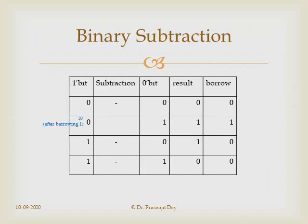For binary subtraction: 0−0 gives result 0 borrow 0; 0−1 gives result 1 borrow 1. Why? In decimal, 0−9 requires borrowing: 0 borrows a 1, becoming 10, and 10−9 = 1 with borrow 1. Similarly in binary, 0−1 gives result 1 and borrow 1. For 1−0, result is 1 borrow 0; and for 1−1, result and borrow are both 0.